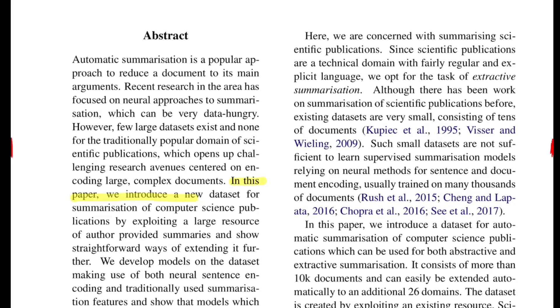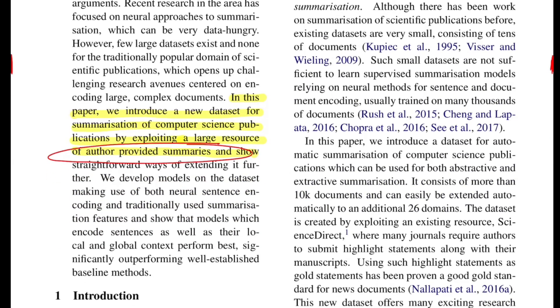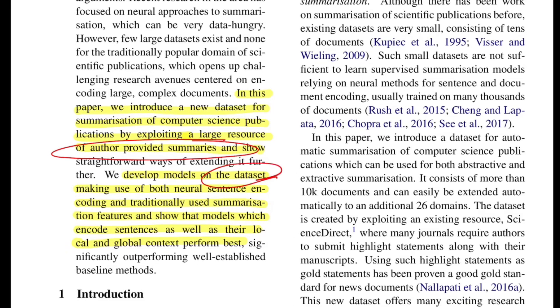They say in this paper we introduce a new dataset for summarization of computer science publications by exploiting large resources of author-provided summaries. Apart from introducing a technique of supervised extractive summarization, the authors provide a new dataset for summarization around computer science research publications. They mention author-provided summaries, which means they're not pseudo-generating labels; they already have important sentences marked by the authors themselves. They develop models making use of neural sentence encoding and traditional summarization features, showing that models which encode sentences as well as their local and global context perform best.